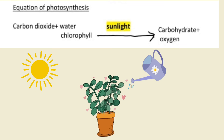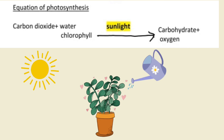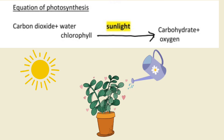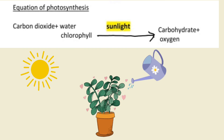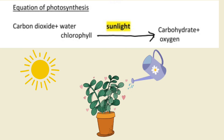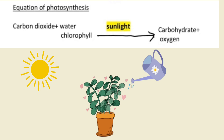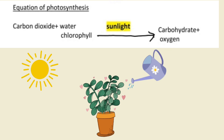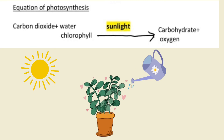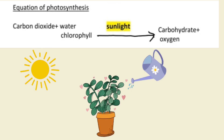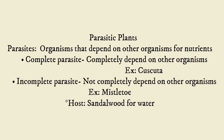The equation of photosynthesis: carbon dioxide plus water, in the presence of chlorophyll and sunlight, produces carbohydrate plus oxygen — also known as starch plus oxygen.